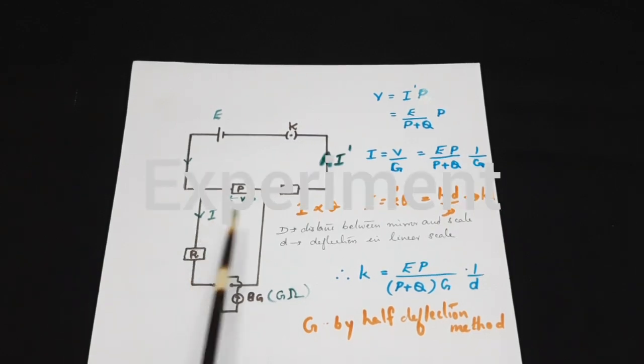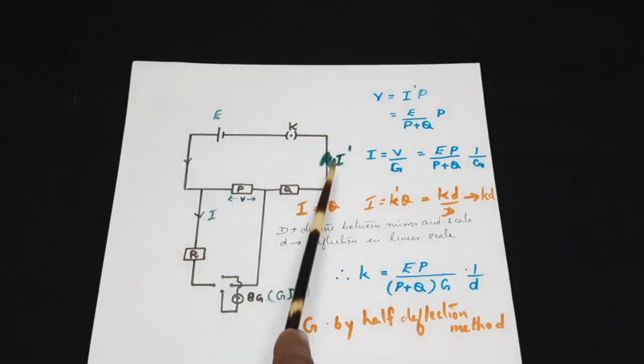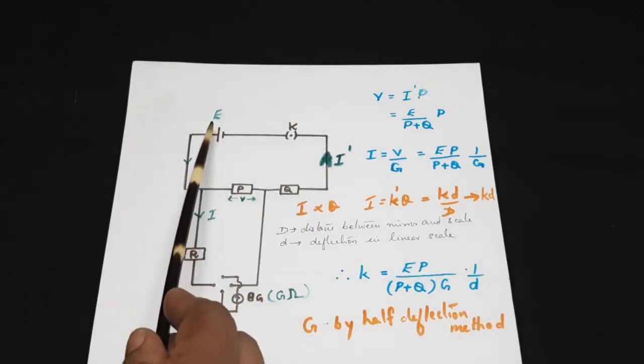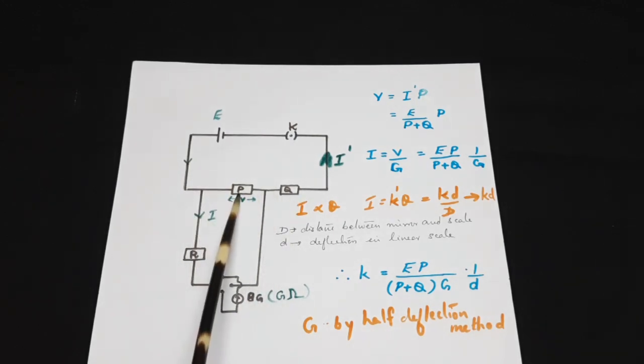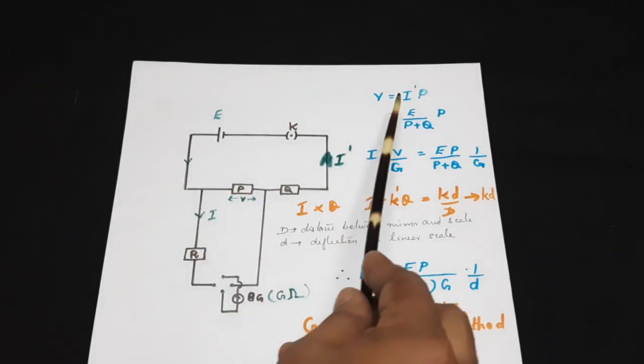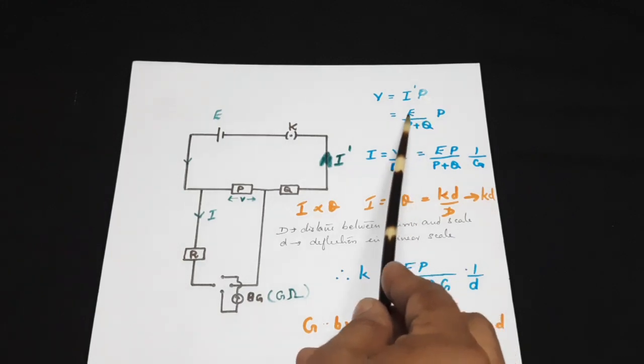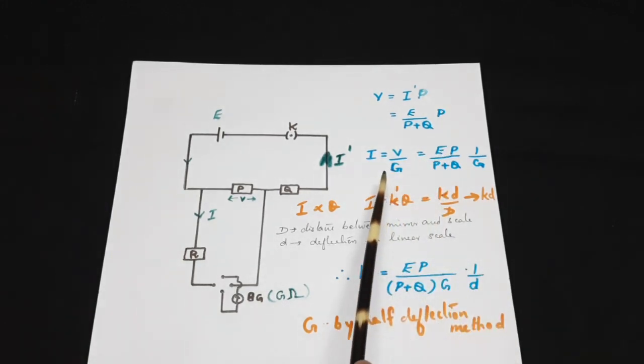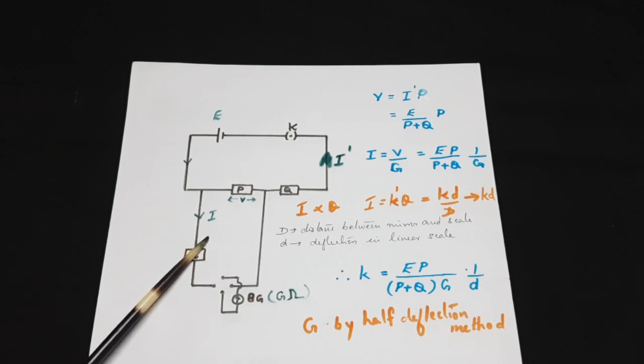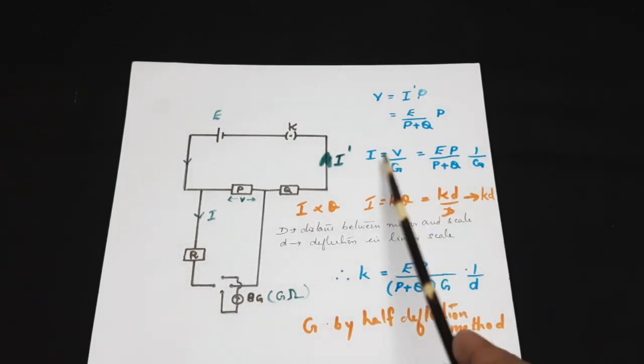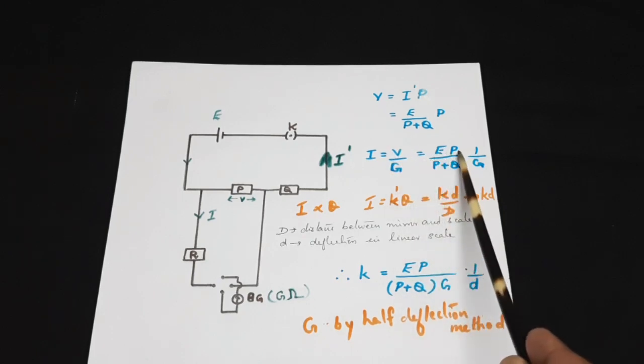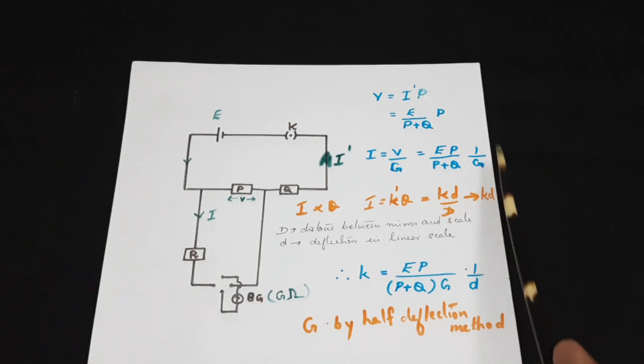To calculate this I, let us first calculate I dash. I dash will be equal to E by P plus Q. Voltage V will be equal to I dash into P, so V is equal to I dash into P is equal to E by P plus Q into P. The current through the secondary I will be equal to V by P plus Q into 1 by G.